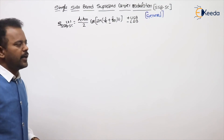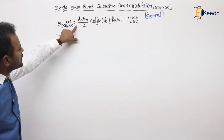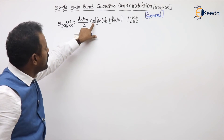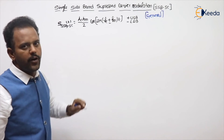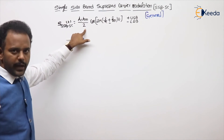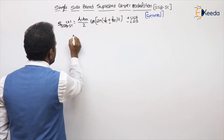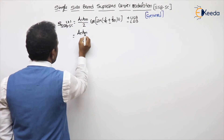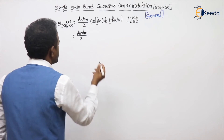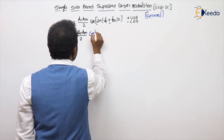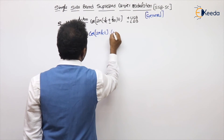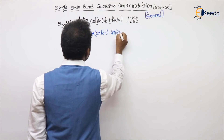Now, how do we get the general expression? First, observe the single-tone expression — it is in the form of cos(A + B) or cos(A − B). So try to apply the cos(A + B) and cos(A − B) expansion formula. Then it becomes (AC·AM)/2 · [cos(A + B)], where cos(A + B) = cos(2π fc t) · cos(2π fm t) minus sin(2π fc t) · sin(2π fm t).